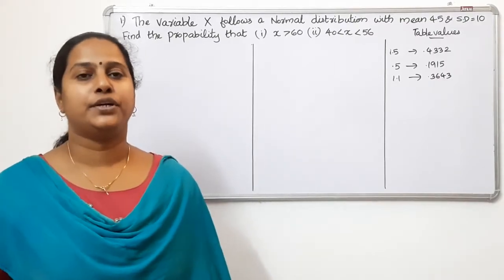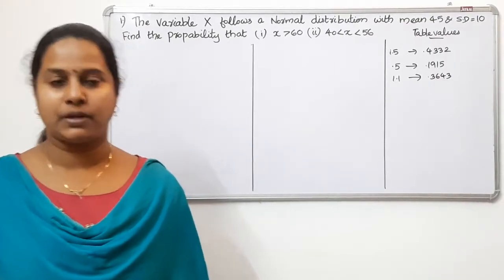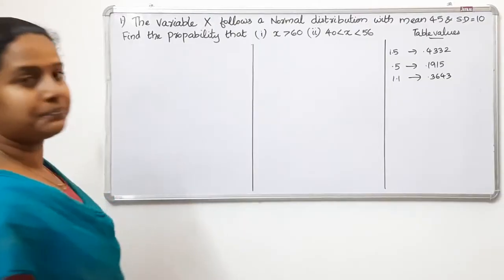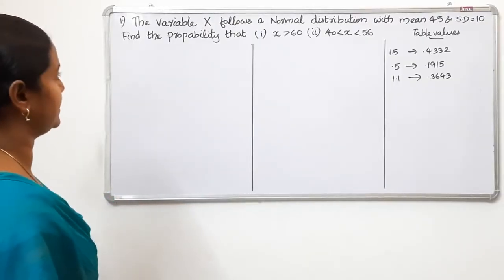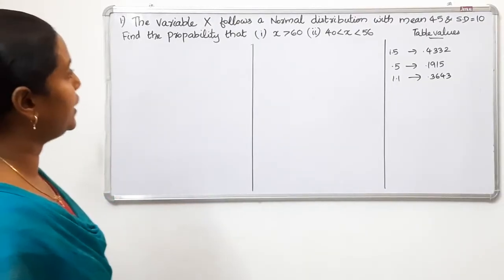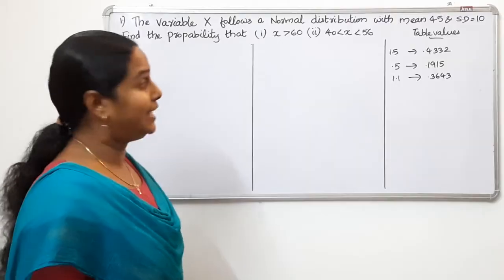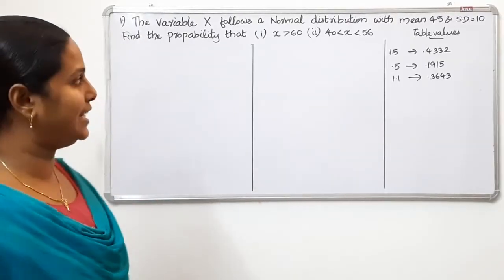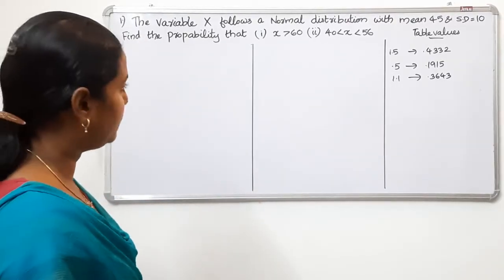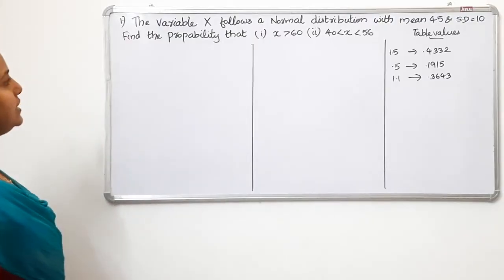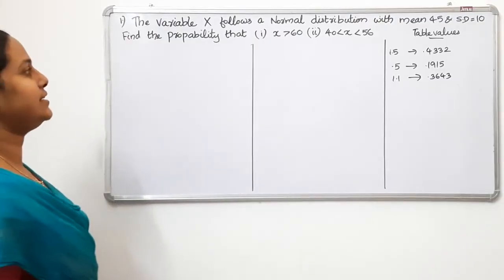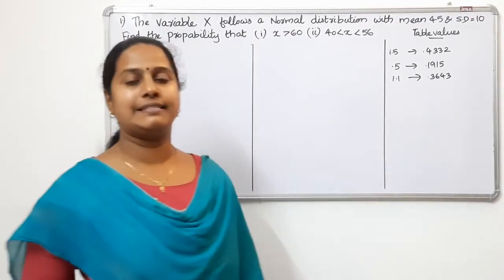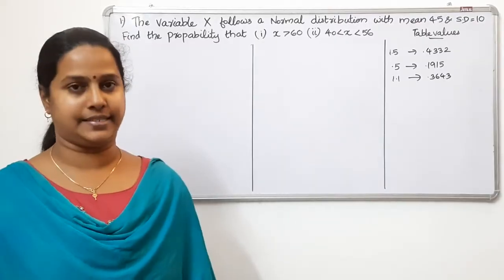What are the normal distribution problems? I am going to see the first question. The variable x follows a normal distribution with mean 45 and standard deviation equal to 10. Find the probability that x is greater than 60. Second question: find the probability that 40 is less than x less than 56.